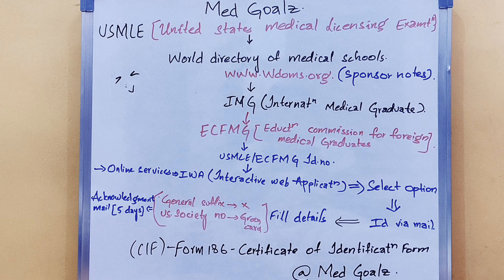When filling in the details, where you should be careful is about the general suffix and US Social Security number. The general suffix is for US citizens for their names, and the Social Security number is for people who have a green card and proper residence in the US. After filling this, you will receive an acknowledgement email within five days.